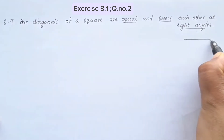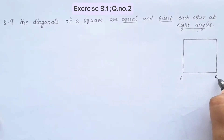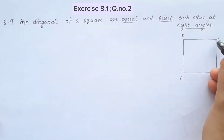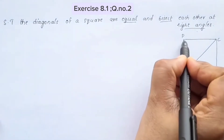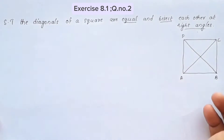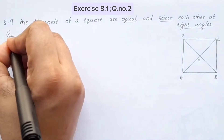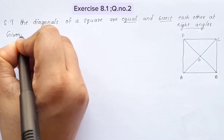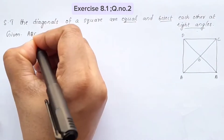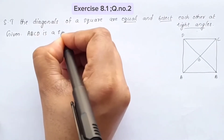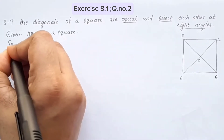We have a square here. This is the square ABCD. These are the diagonals AC and BD, and O is the intersection point. Given: ABCD is a square. Let's prove two things.